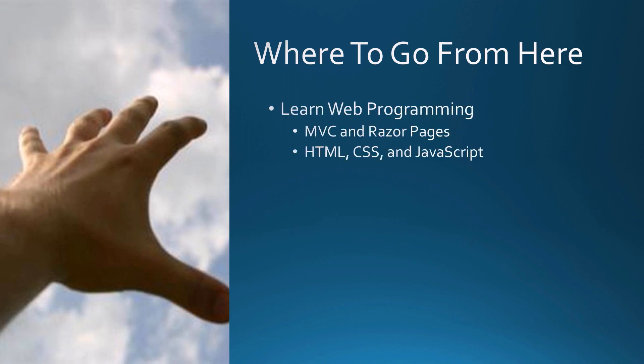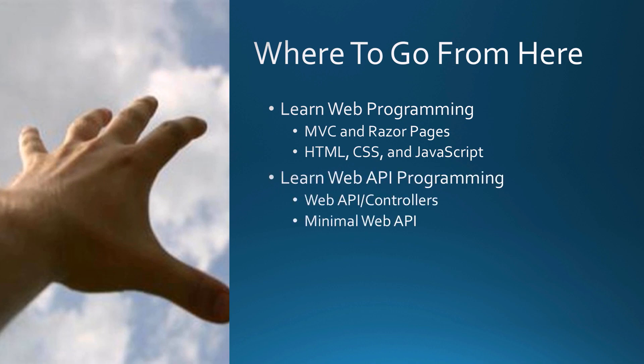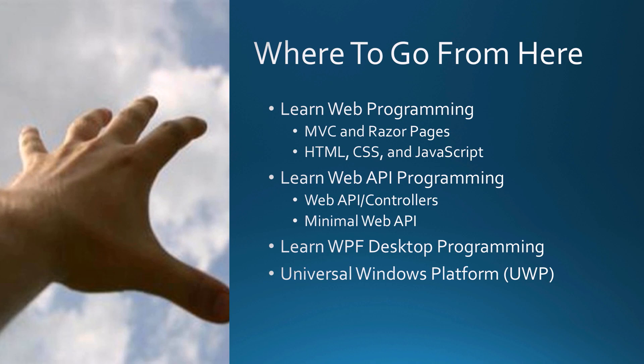Where do you go from here? You might jump into web programming — MVC, Razor Pages, HTML, CSS, and JavaScript — or learn Web API programming with web API controllers or the minimal web API. Maybe you want to do desktop programming with WPF, Universal Windows Platform development, or mobile development using .NET MAUI. These are all things you can now take advantage of now that you've learned the basics of object-oriented programming.